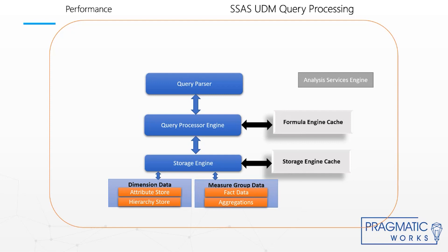In multidimensional, an MDX query comes in and an XMLA listener accepts the request, parses it, and passes it along to the query processor for query execution. The query processor, upon receiving a validated and parsed query from the query parser, prepares an execution plan which dictates how the requested results will be provided from the cube data and the calculations used. The query processor caches the calculation results in the formula engine cache. The storage engine responds to subcube data requests — a subset or logical unit of data for querying, caching, and data retrieval — generated by the query processor.